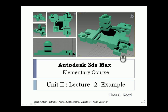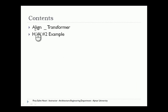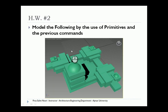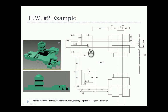Hi, in today's lecture — Unit 2, Lecture 2 example — I will continue in Autodesk 3D Studio Max elementary course. This lecture is a continuity of the previous one, and I'm going to model this simple architectural composition. We studied the basics of primitives modeling and snapping, and I need to explain one extra command which is Align, then we'll jump in and model the geometry.